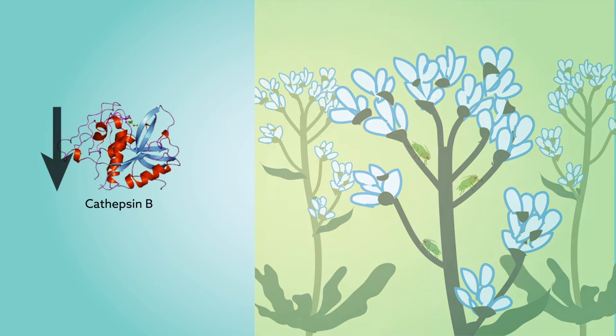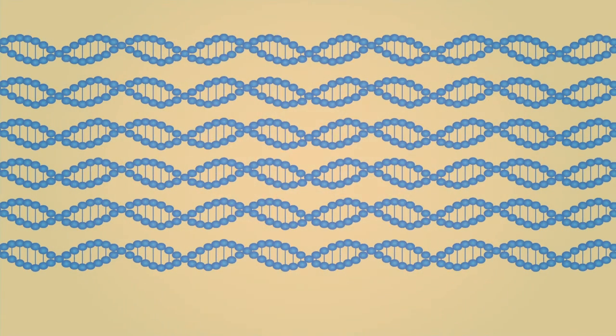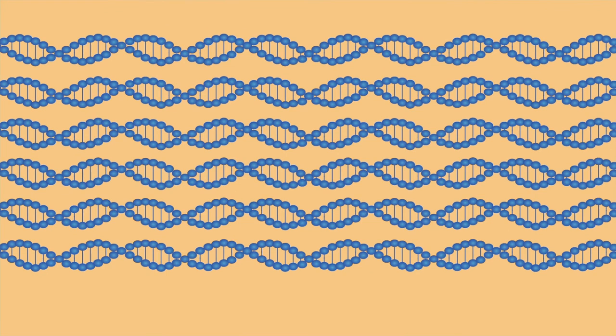When the researchers reduced their expression, fewer aphids survived and they were less fertile. The results suggest that the secret behind the green peach aphid's varied diet is its ability to rapidly regulate gene expression of specific clusters,